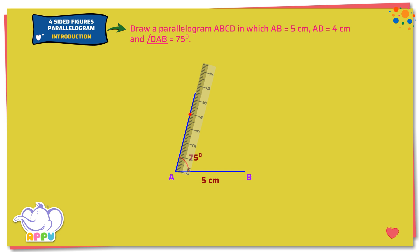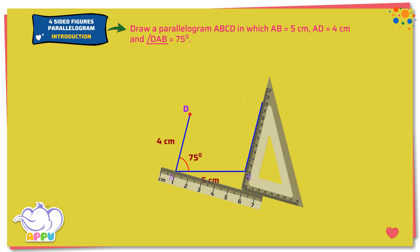Mark D on the line such that AD is 4 cm. Draw a line parallel to AD at B. Mark C on the line such that BC equals 4 cm.